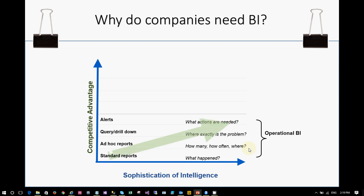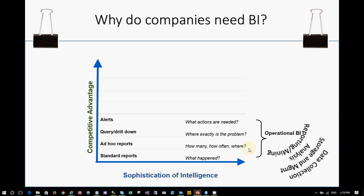If you are able to take action when required based on alerts, you will be more competitive in the market. Operational BI deals with data collection, storage, management, analysis, reporting, and mining. This is what operational BI covers. There is another type of BI we call tactical and statistical BI.